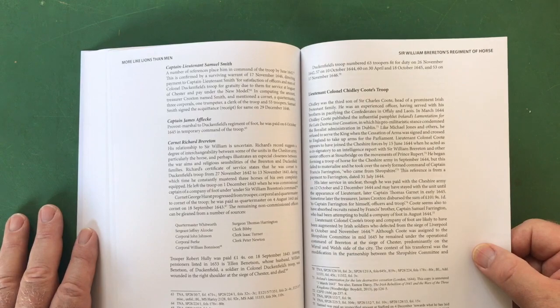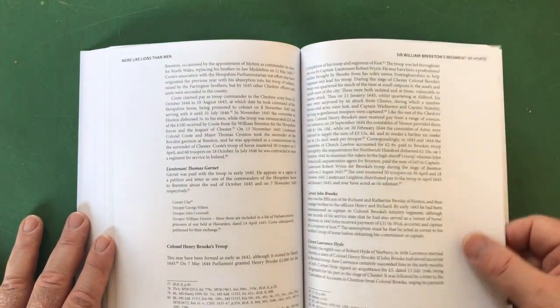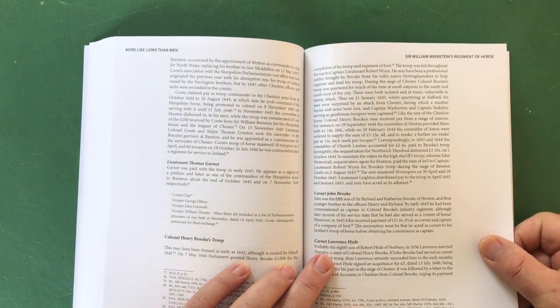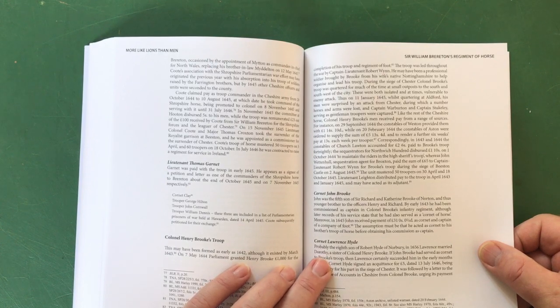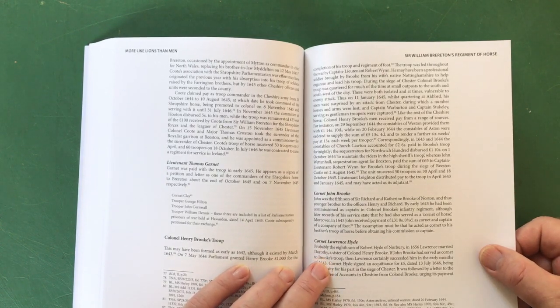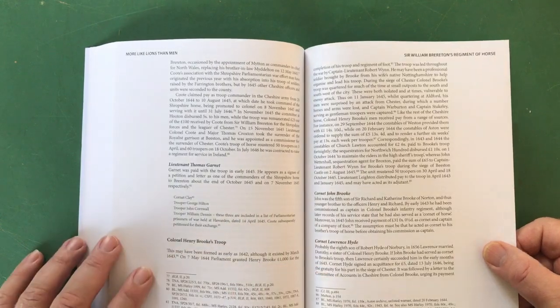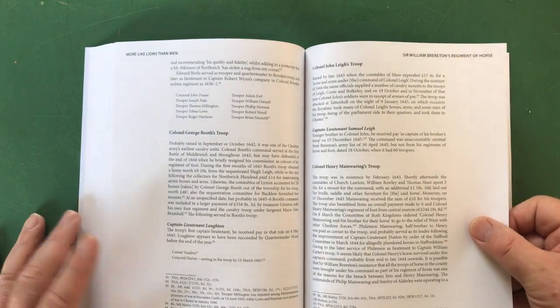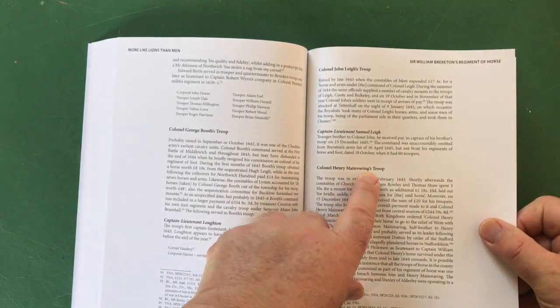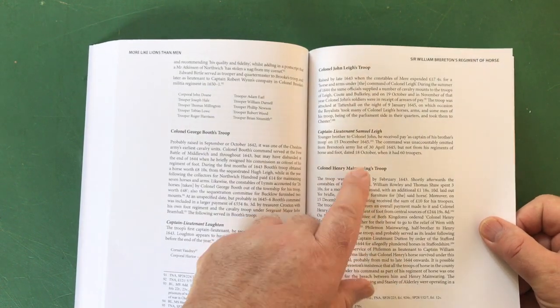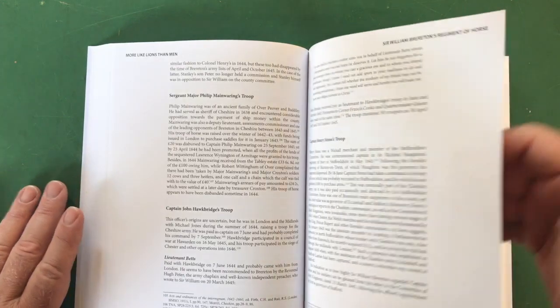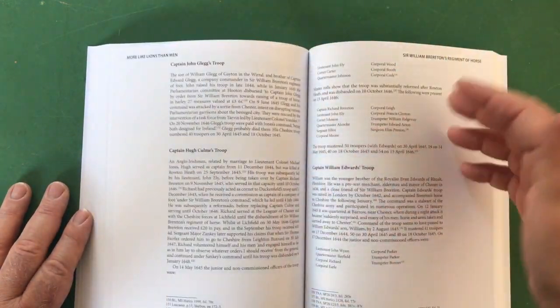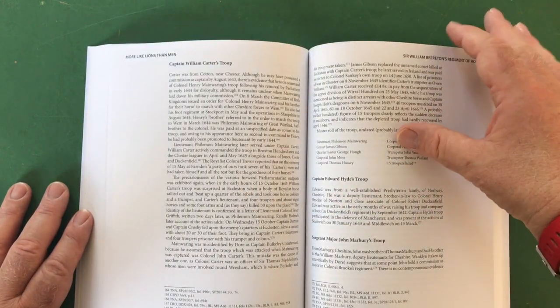Sergeant Major John Brown's troop, Captain Lieutenant Francis Duckenfield, Lieutenant Colonel Chidley Coote's troop and so on. Someone with my name: Cornet Lawrence Hyde, probably the eighth son of Robert Hyde of Norbury. In 1656 Lawrence married Dorothy, a sister of Colonel Henry Brooke. There we go, all these people. Colonel Henry Mannering's troop - yeah, Mannering. People not familiar with English, we say - but think of Captain Mainwaring of Dad's Army, that's how it was felt.